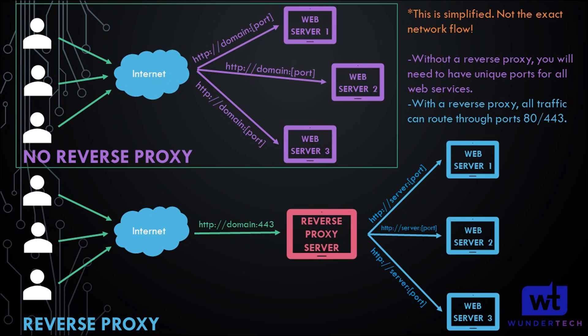You only have ports 80 and 443 that can be port-forwarded to one specific device, so if you are using that for a website or something else you have to use a different port. With a reverse proxy server, you open ports 80 and 443 to your reverse proxy server, and then your reverse proxy server uses different domain names to access all of those web servers. For example, I own wondertech.net — I could use plex.wondertech.net to get to Plex and bitwarden.wondertech.net to get to my Bitwarden instance, exposing as many services as I want while only having ports 80 and 443 open.